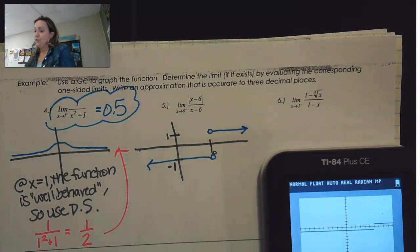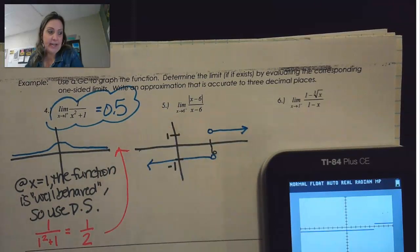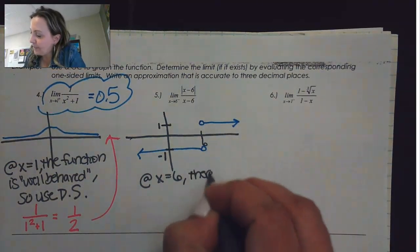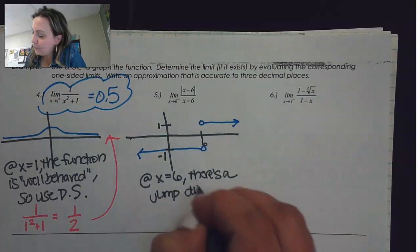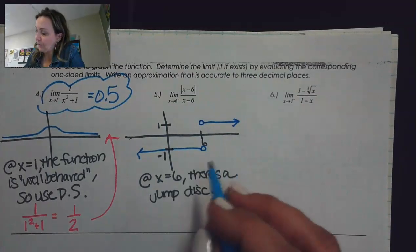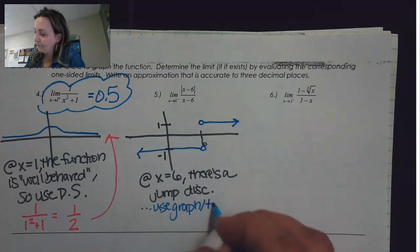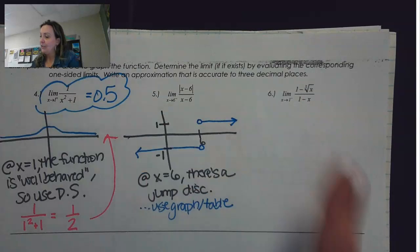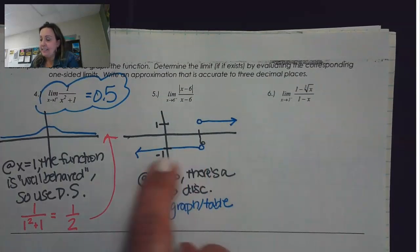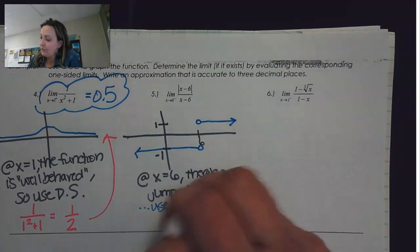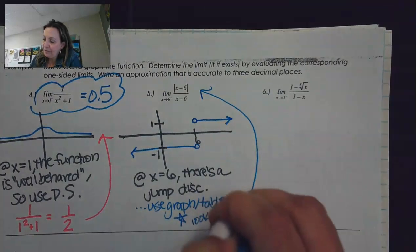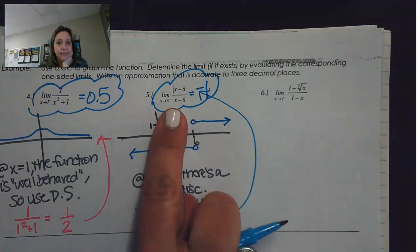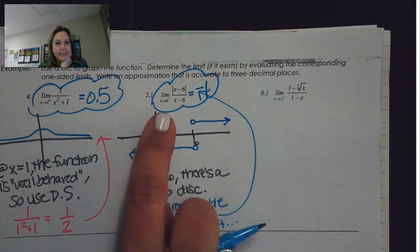If I try direct substitution there's a problem because putting 6 in is an issue. At x equals 6 there's a jump discontinuity. Because there's a jump discontinuity, we're going to have to use the graph or the table. This was looking at 6 from the left. If I look at 6 from the left, all these values are negative 1. Using the graph, I can see that this is going to be negative 1. If it was 6 from the right, then it would be positive 1. If it was just plain 6, it doesn't exist.